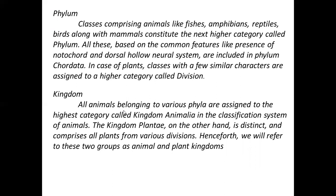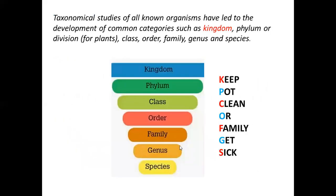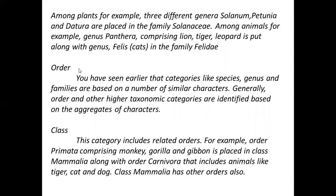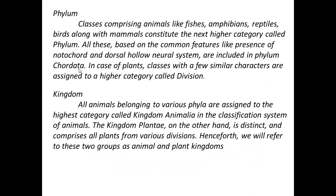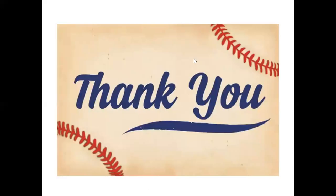So what did we learn in today's class? We learned the hierarchy and how to remember it — the mnemonic sentence: 'Keep pot clean and family get sick.' Put it in your brain and it will give you the true answer. That was so much for today. In the next class, we will study more examples about species and the details of these categories. Thank you.